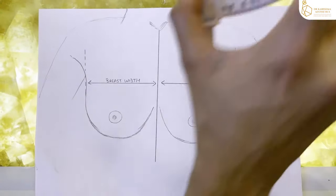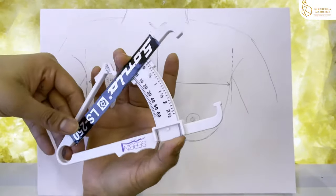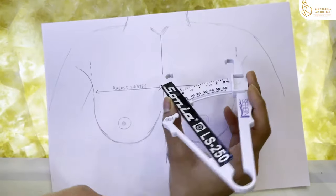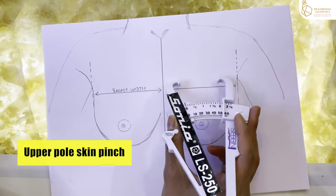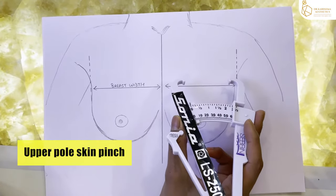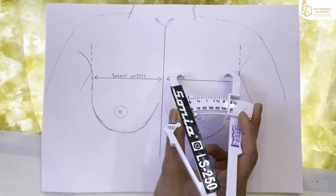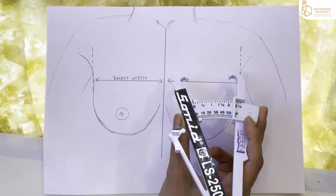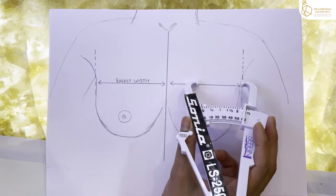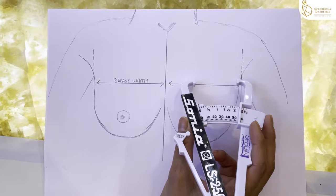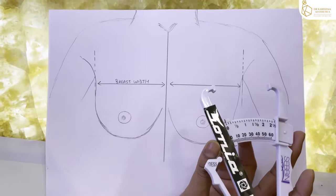Another very common measurement we take involves calipers, which are used to pinch the skin on the top portion of the breast in order to know what is the existing volume of the breast tissue under which we will be placing the implant. So the skin pinch on the top area of the breast is something we also take into consideration.